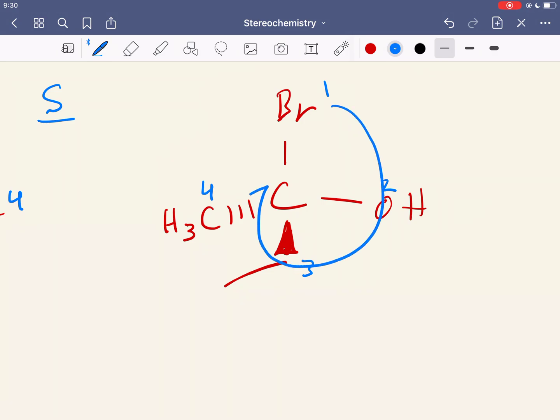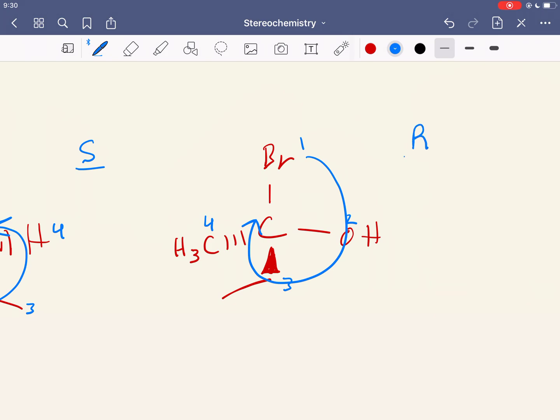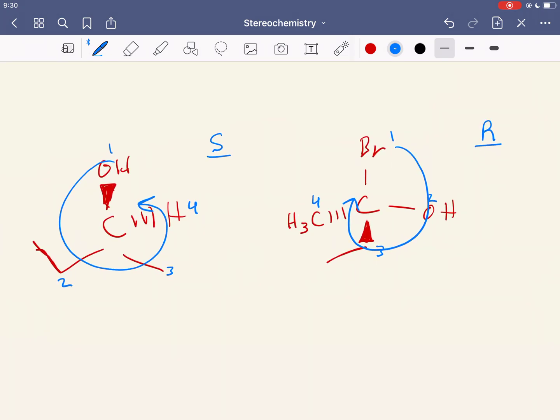So we go 1 to 3, and we see that the rotation is clockwise, so we say that's R. So that's how you look at a molecule, assign priority, and then determine whether it's R or S. So that's that way of looking at stereochemistry.